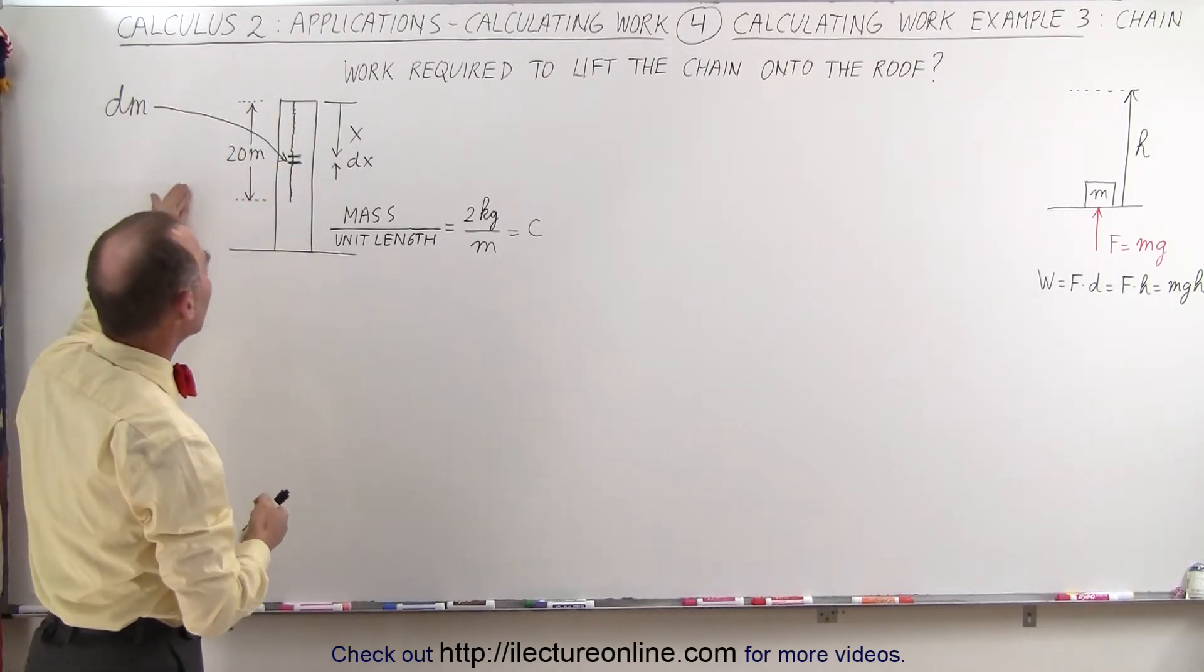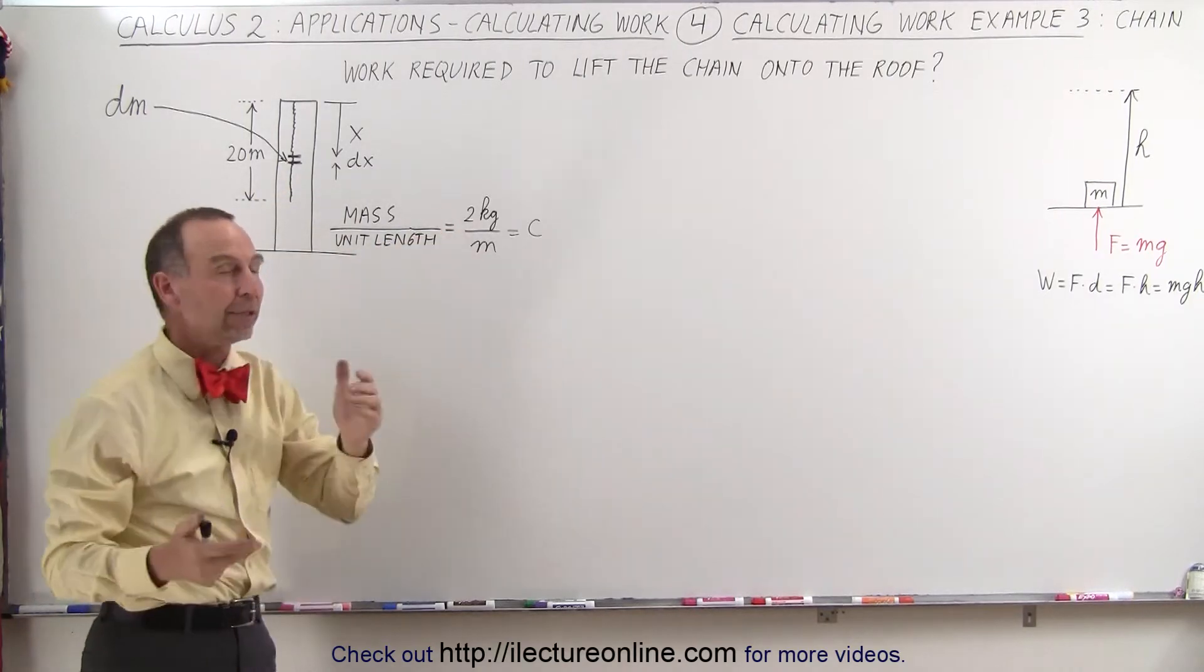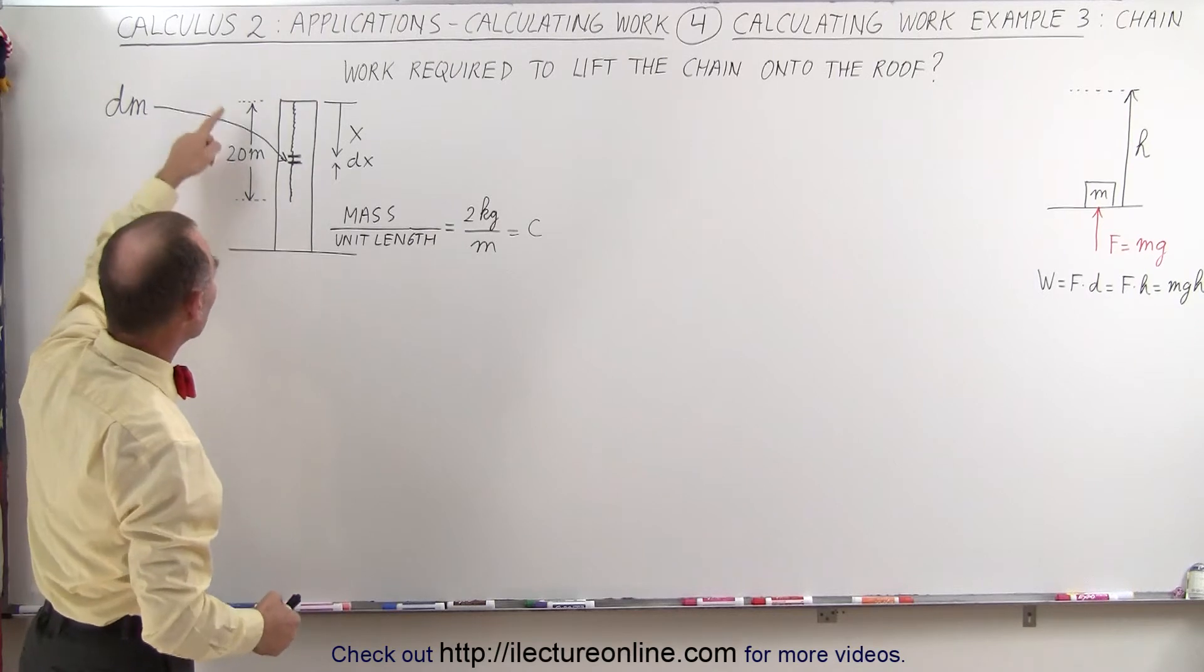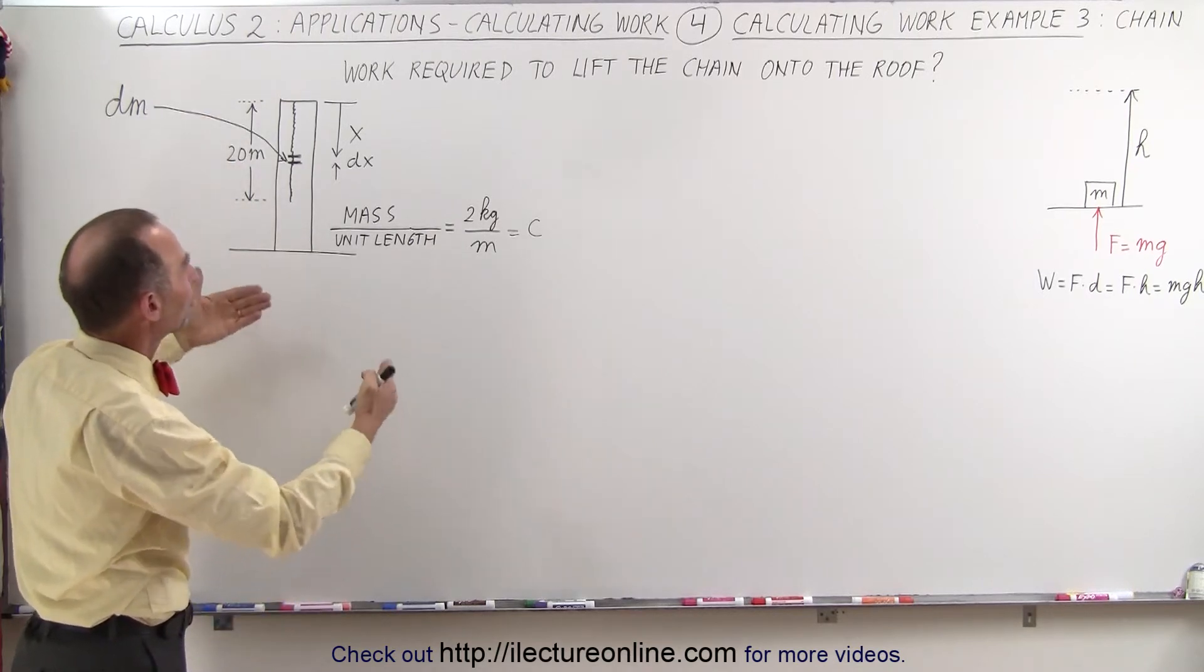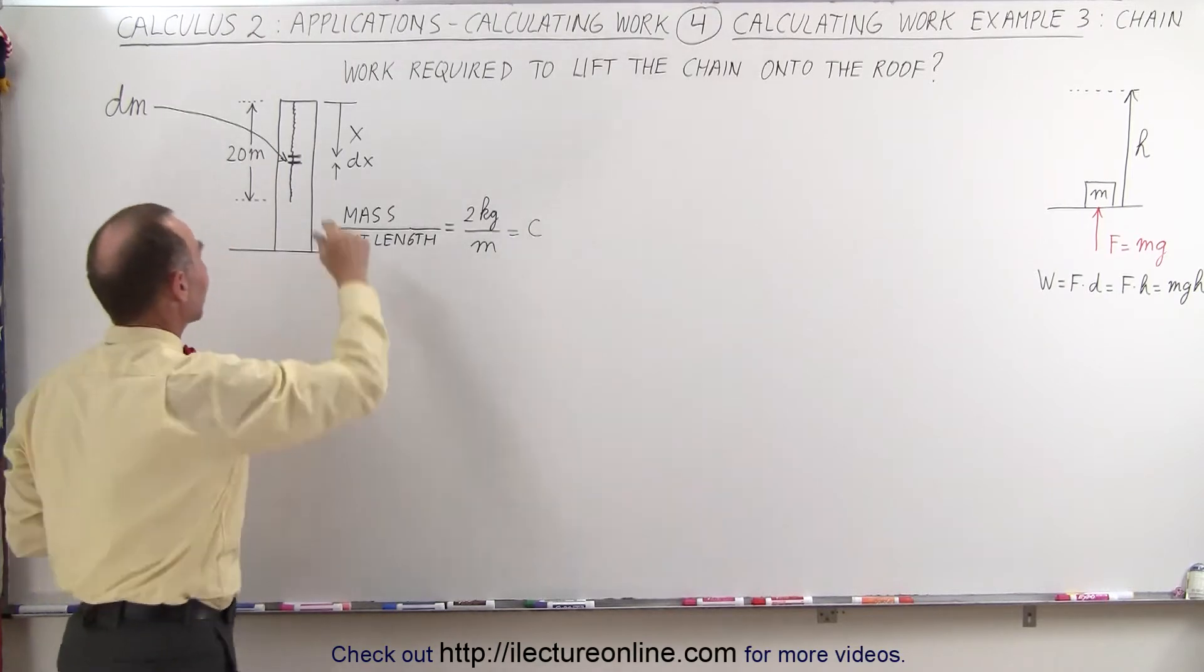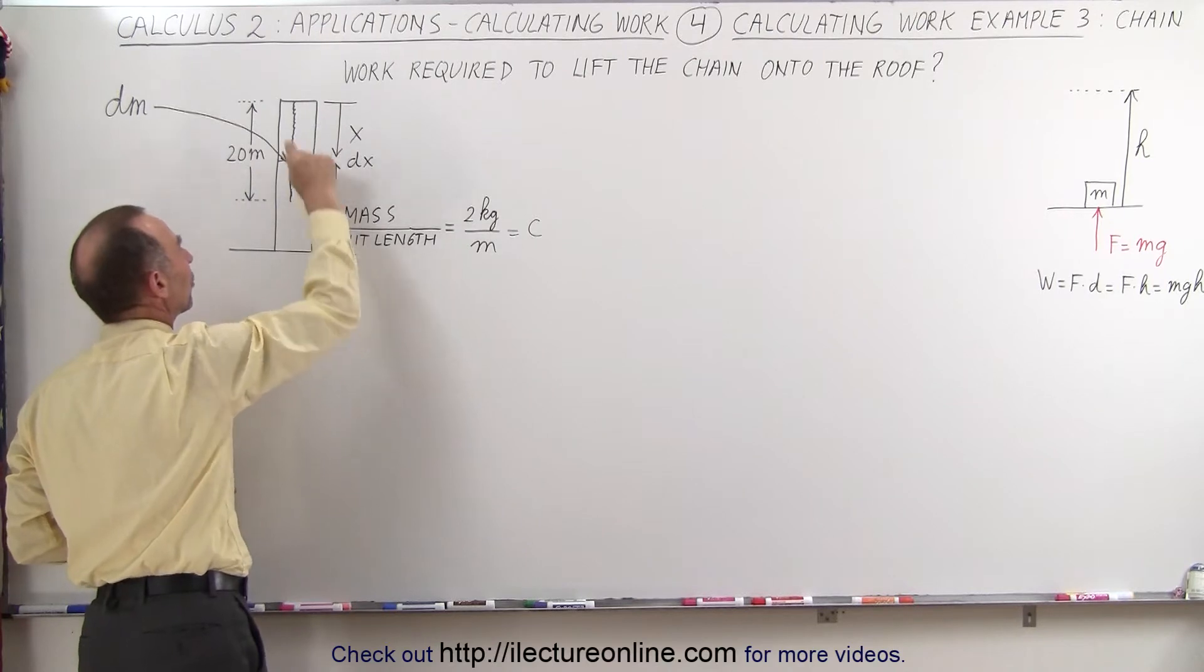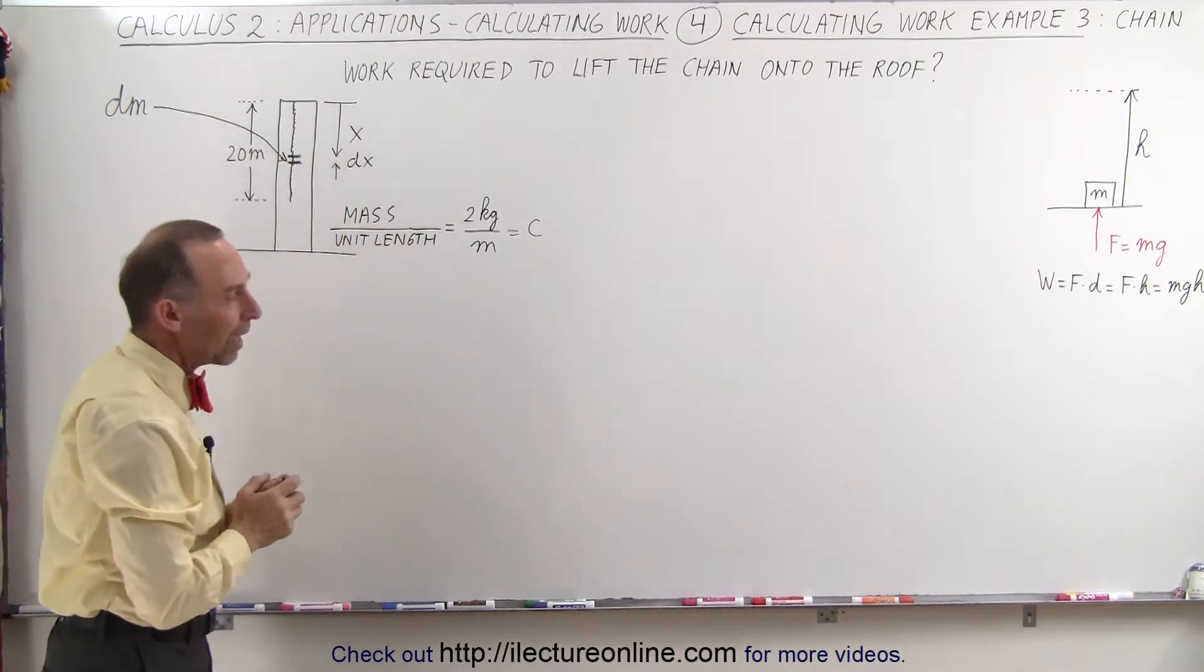In this particular case the chain has mass per unit length equal to 2 kilograms per meter. The chain is 20 meters long so it has a total mass of 20 times 2 or 40 kilograms. Again, it takes less work to lift this portion of the chain to the roof as it does this portion of the chain. So how do we do that?